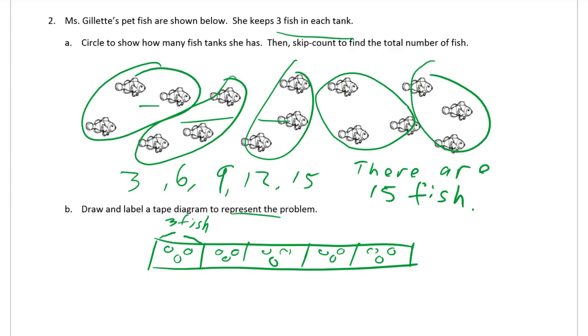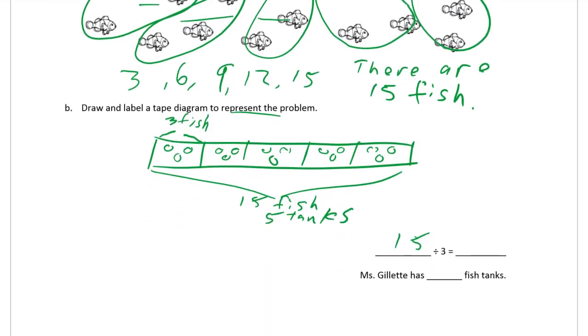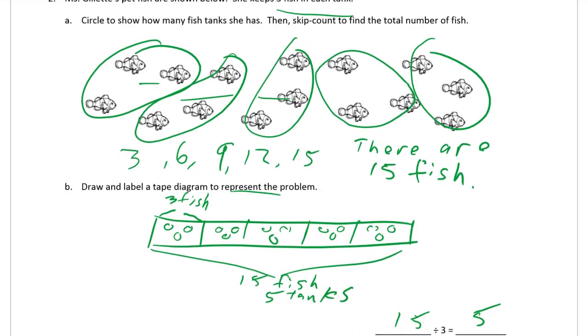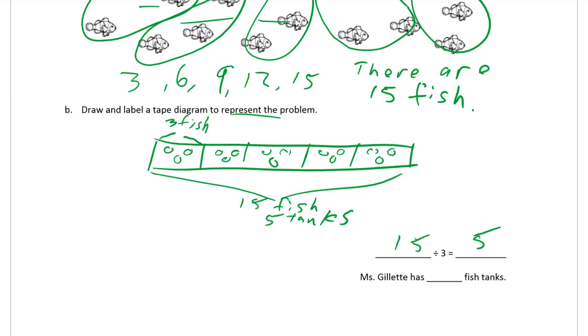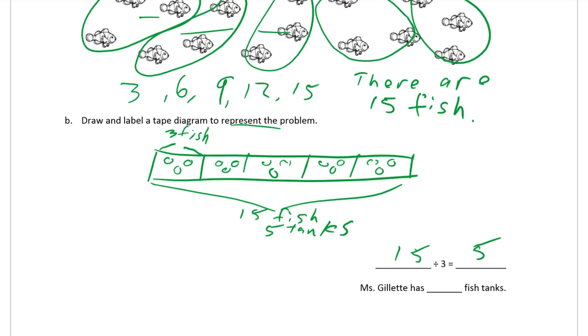What we did know is we knew how many fish there were because we had all the fish. So there were 15 fish, and 1, 2, 3, 4, 5 tanks. That's all labeled. And then we have 15 fish divided by 3 fish in each tank equals 5. The question was how many fish tanks she has. 5 fish tanks.